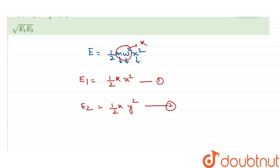From equation 1, I can calculate the value of displacement x: x = √(2E1/k). Similarly, from equation 2, I can calculate the value of y: y = √(2E2/k).